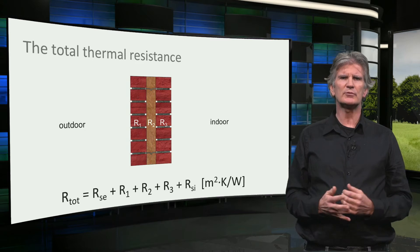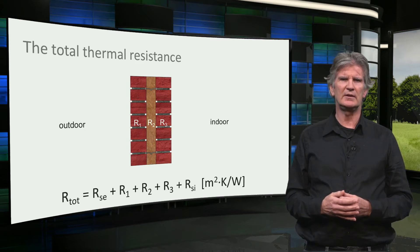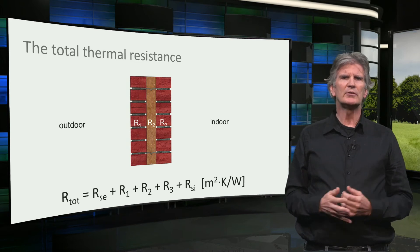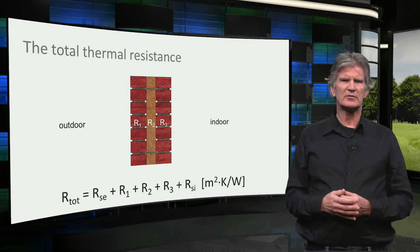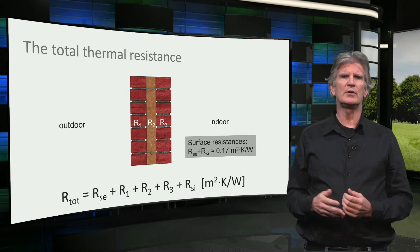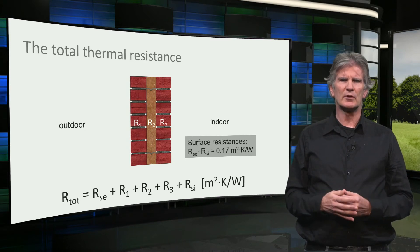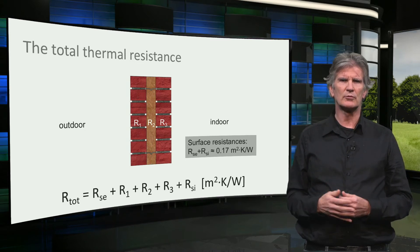These surface resistances are determined by heat convection and radiation at the surfaces. We won't go into detail about the surface resistances. It's enough to know that together they contribute around 0.17 to the total thermal resistance.